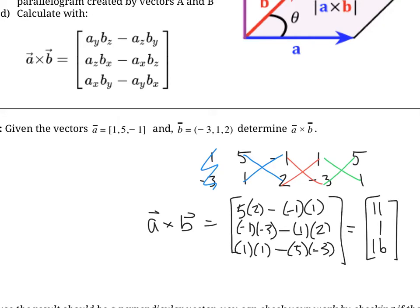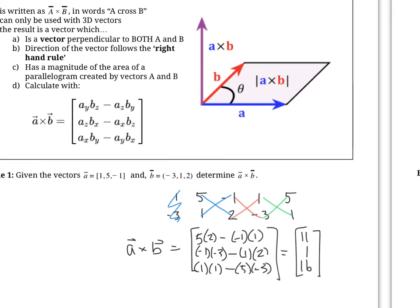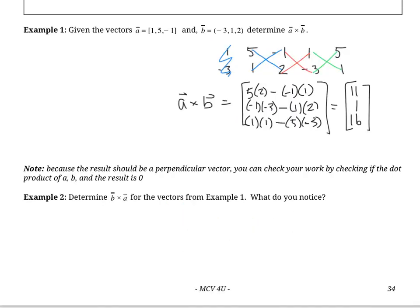So there's our new vector: eleven, one, sixteen — that is the cross product of A and B. Looking at what this answer means, A and B are two vectors, and what we produced is a third vector that sticks out of both of them. To check your answer, you can take the dot product: A dot the answer should give zero, and B dot the answer should also give zero, since the cross product is perpendicular to both.